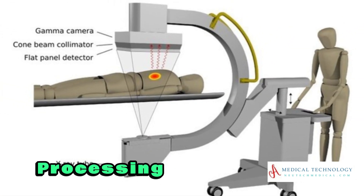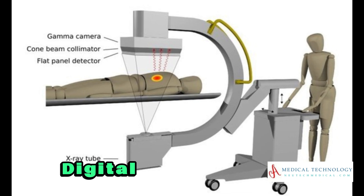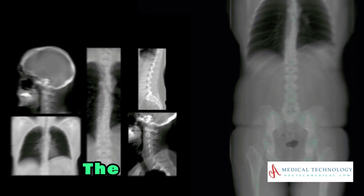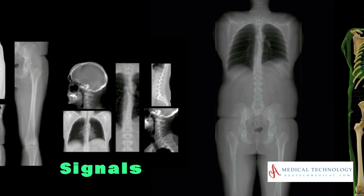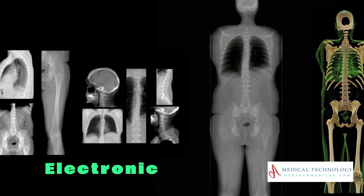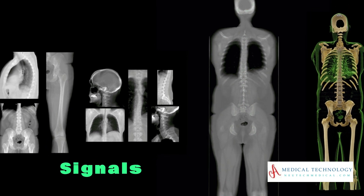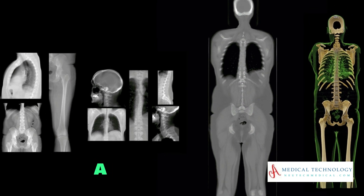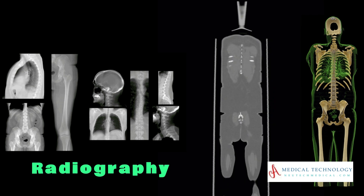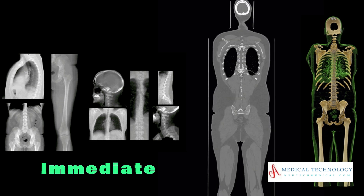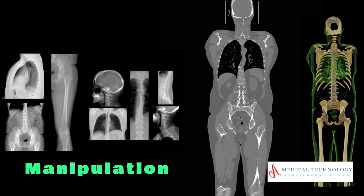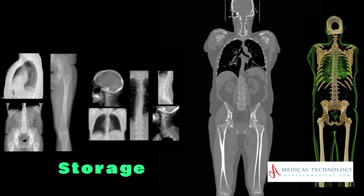Image processing — digital radiography. In digital radiography, the detected X-ray signals are converted into electronic signals and processed by a computer. Digital radiography allows for immediate image viewing, manipulation, and storage.